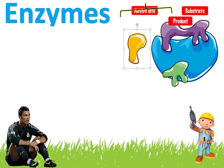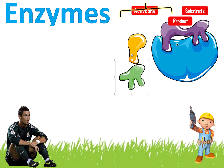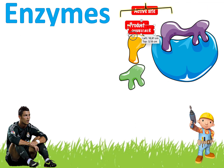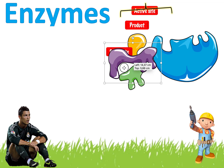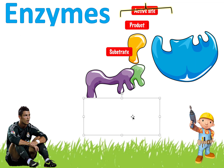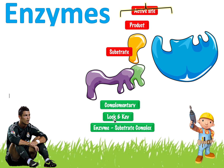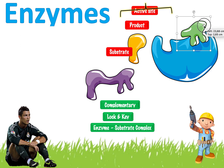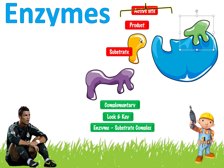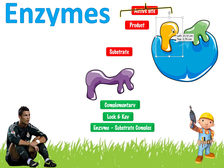We're also missing some key words. Three more: complementary, lock and key, and enzyme-substrate complex. The easy one first — when the substrates bind to the enzyme like this, this is called the enzyme-substrate complex.